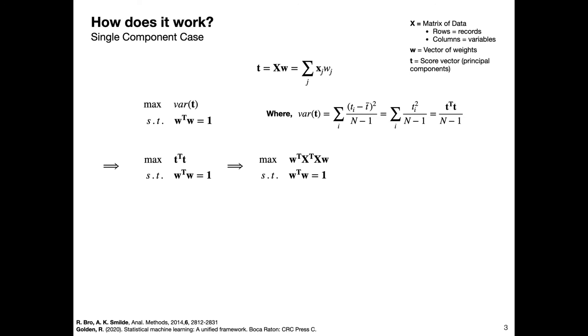We can rewrite the optimization problem using our above expression for t. It turns out this is actually a pretty straightforward optimization problem to solve. Don't be intimidated by the matrices and vectors—we can use a very well-known and common technique in calculus known as the method of Lagrange multipliers.